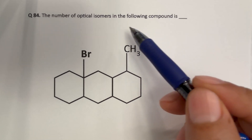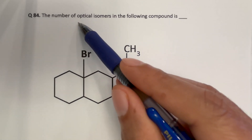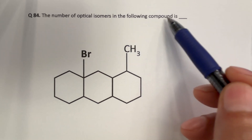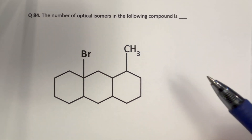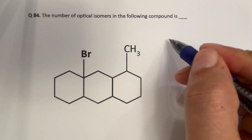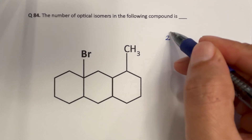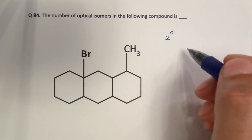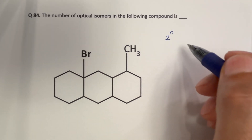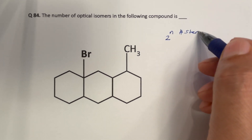Hello everyone. Here is a question from Stereochemistry. The number of optical isomers in the following compound is how many? The number of optical isomers is equal to 2 to the power n, where n is the number of stereocenters.